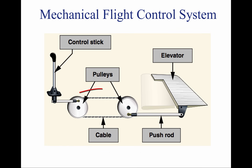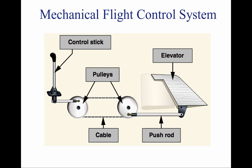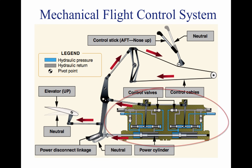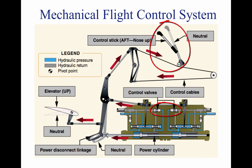Mechanical systems operate by mechanical connections between the control stick and the control surface. In this case, the control stick is attached by pulleys to the elevator. As flight control systems became more complex, mechanical circuits were developed to reduce the weight and limitations of mechanical systems. The control stick is used to move control valves on the mechanical circuit, which controls cylinders that move the control surfaces.